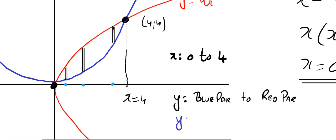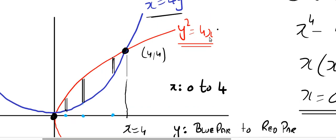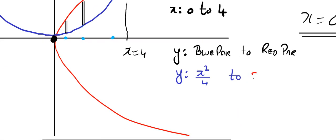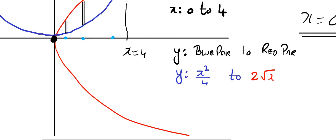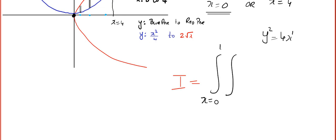So y varies from x²/4 to 2√x (from the red parabola, which gives √(4x) = 2√x). The constant limits will be the outside limits and the variable limits will be the inner limits.